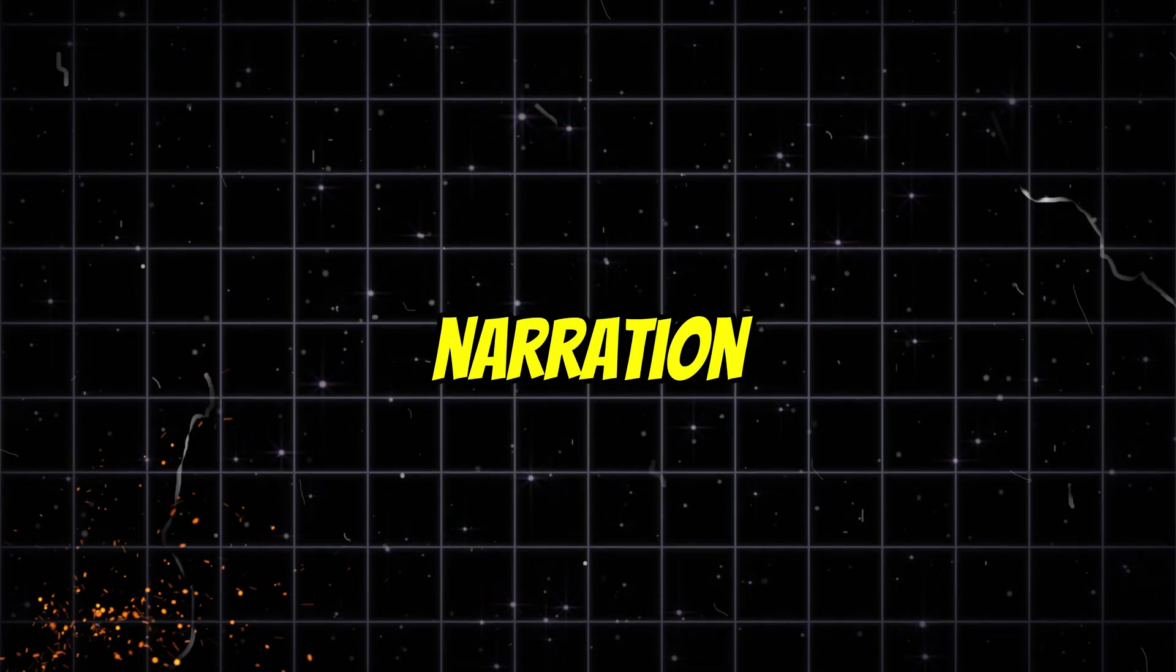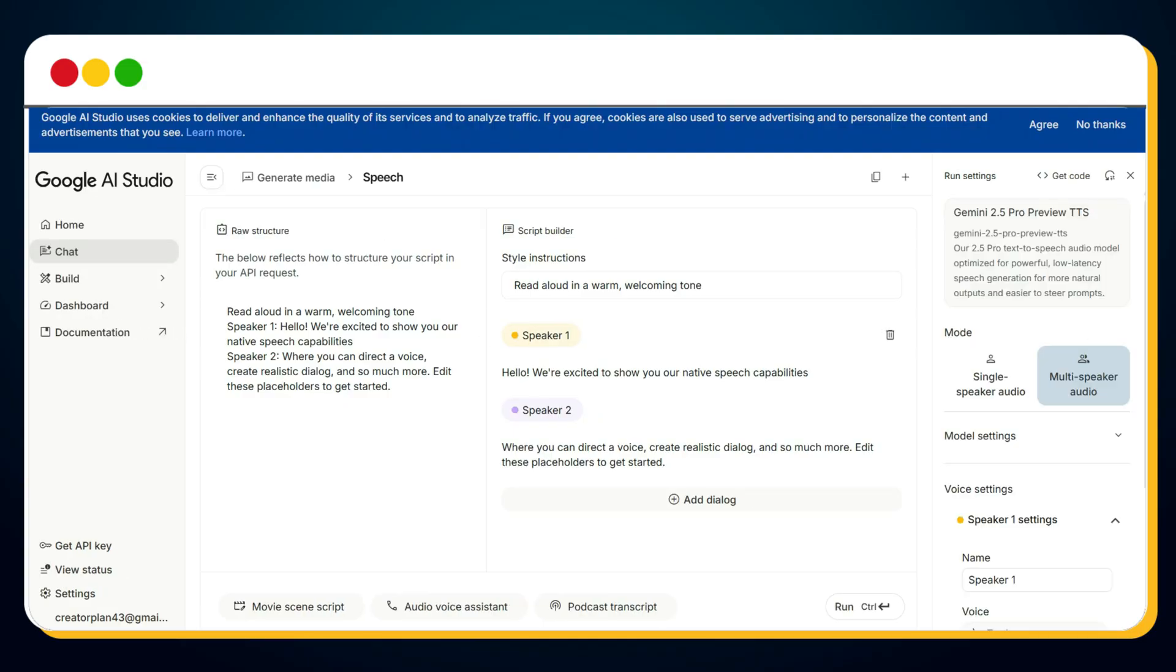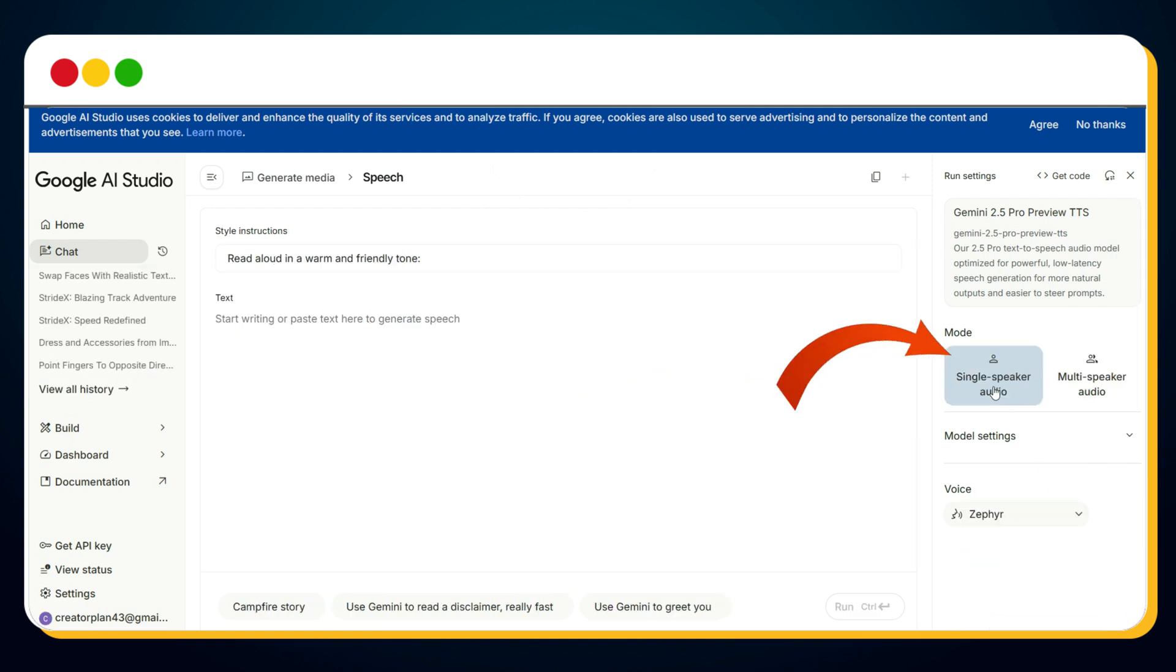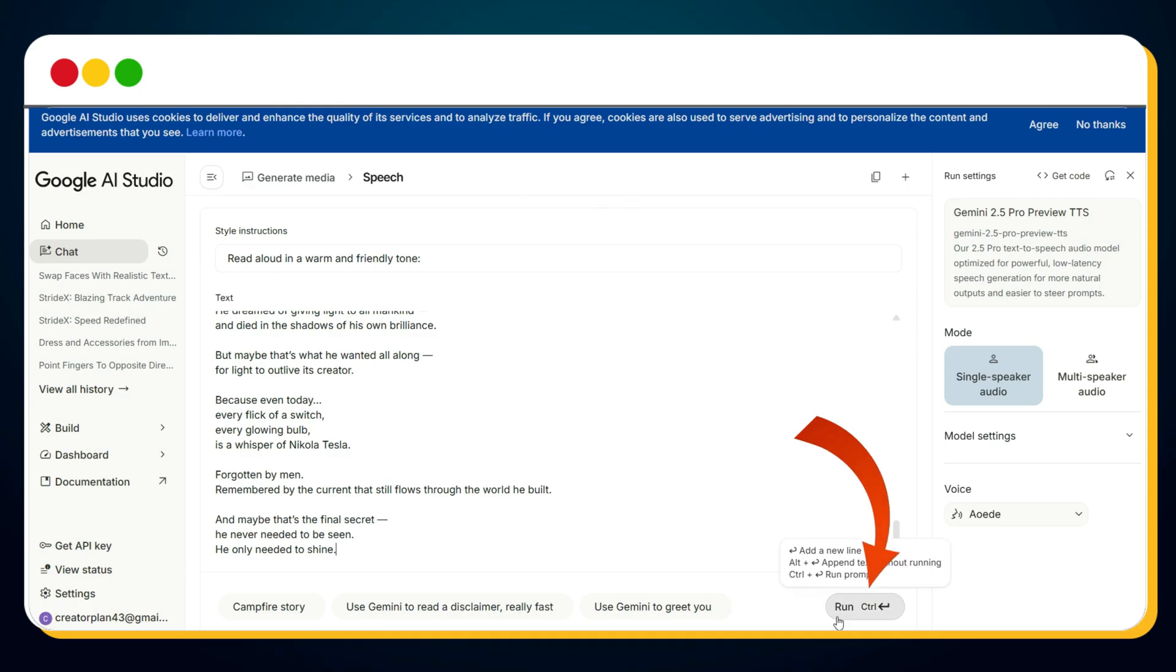To create voiceover narration for our script, head to Google AI Studio Text-to-Speech. Link in description. Select single speaker audio. Next, preview the voice. Choose a voice that matches your story's mood. Paste your script and hit run. Within seconds, you'll have a studio-quality narration ready to download and sync with your animation. Let's preview it. He died alone in a silent hotel room. That's it. Your script now sounds cinematic.